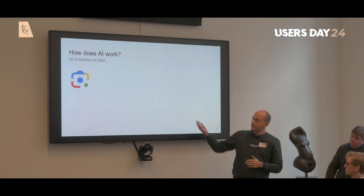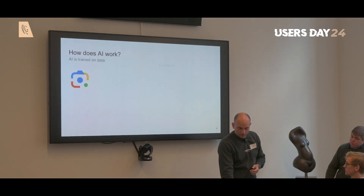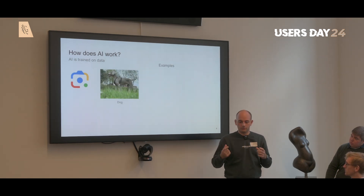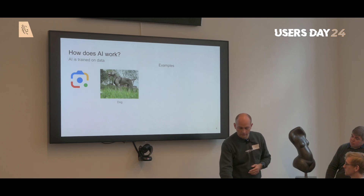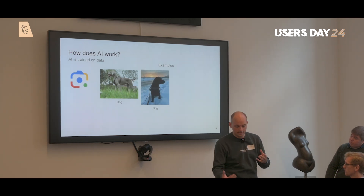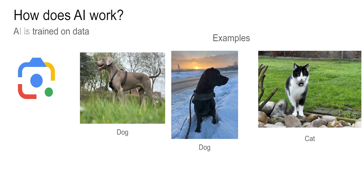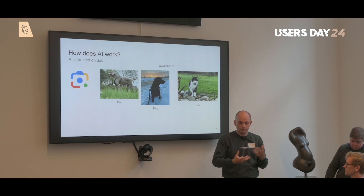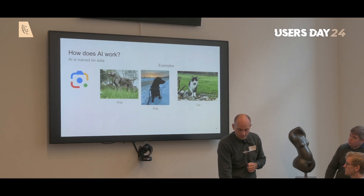In the example use case of Google Lens, we show it a lot of different examples. Each time we show it a picture with a label — for example, a picture of a dog labeled as a dog, then another picture of a dog, and also pictures of cats. We do this not just three times but millions and millions of times with millions of data points. In the end, the AI learns the distinguishing features of each of these animals and other objects we can photograph.